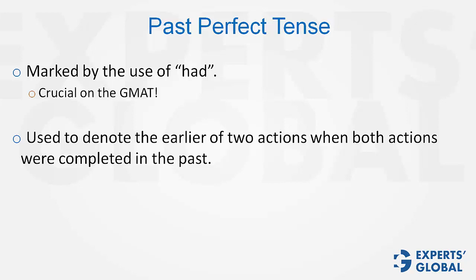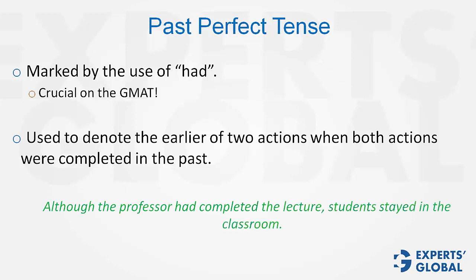Let's understand it by an example. Look at this sentence. There are two actions happening: the professor completing his lecture and students staying back in the classroom. Both actions are in the past. Which action is more in the past? The professor completing the lecture. Therefore, the past perfect form with the action that happened more in the past is the correct usage. This concept is very, very important.